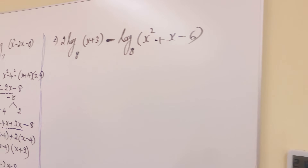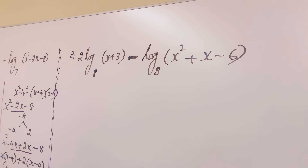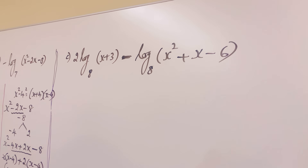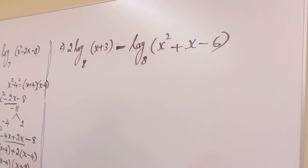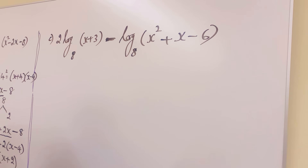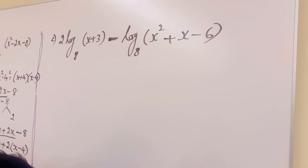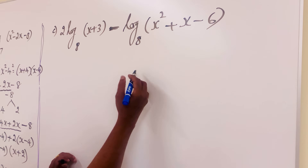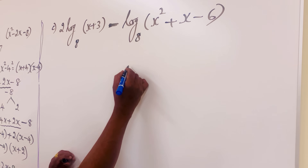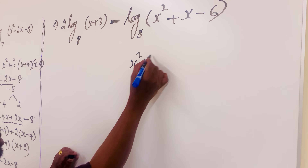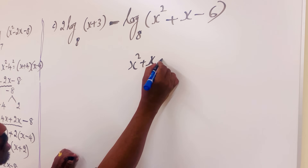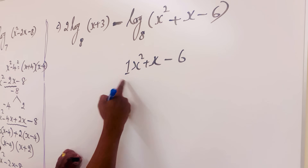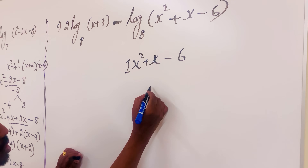The last question involves log of (x plus 2) times log of (x plus 3), to the base. The first term has no problem. The second term is a quadratic one, so we have to use quadratic factorization. We have x squared plus x minus 6. The coefficient is 1, so 1 times negative 6 equals negative 6.